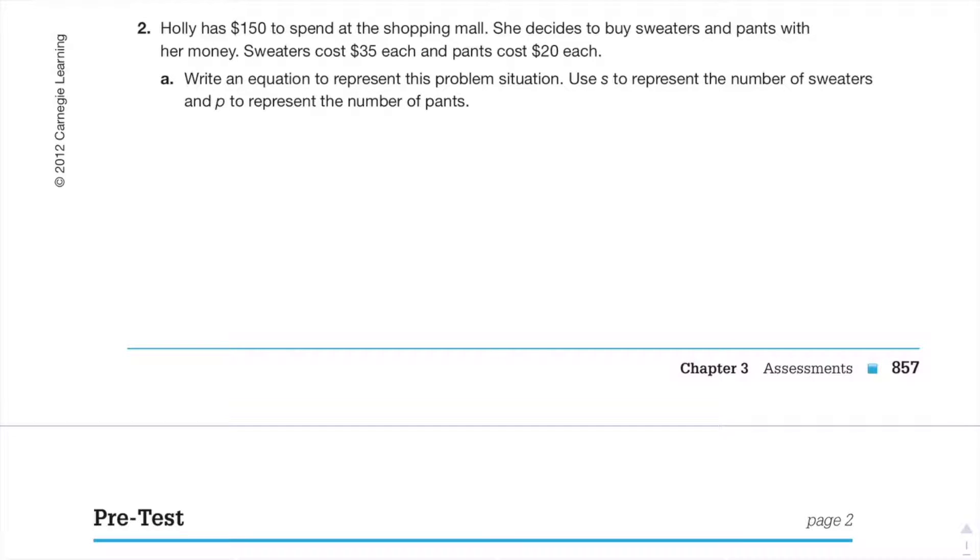Alright everyone, let's go through this Chapter 3 review. Now I'm gonna go through the problems that were assigned. Number two: Holly has a hundred and fifty dollars to spend at the shopping mall. She decides to buy sweaters and pants with her money. Sweaters cost thirty-five dollars each, pants cost twenty dollars each. Write an equation to represent this problem situation. Use s to represent the number of sweaters and p to represent the number of pants.